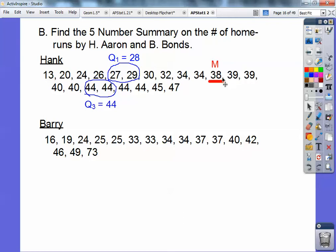And then quartile three, the fifth and sixth numbers after the median. One, two, three, four, five, six. So these are my two numbers. So the average of those is 44. We're going to do the same thing with Barry.